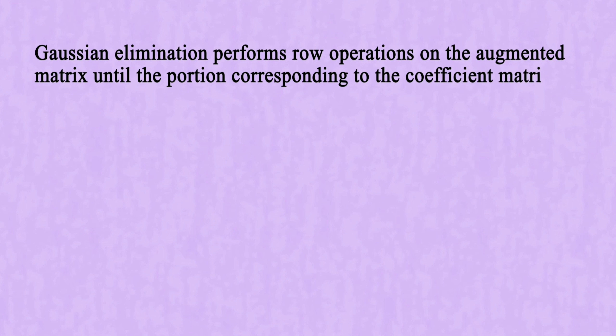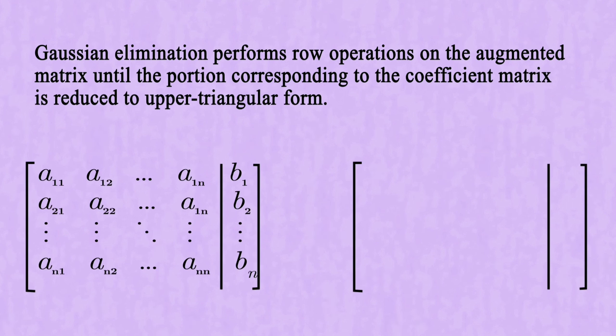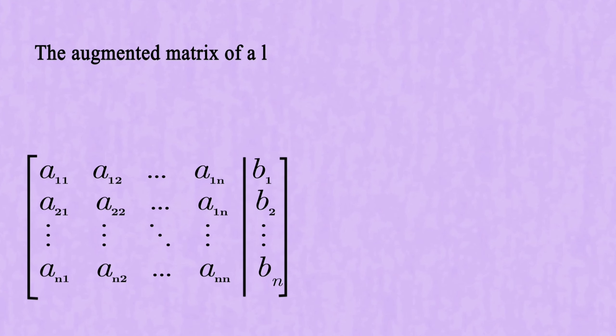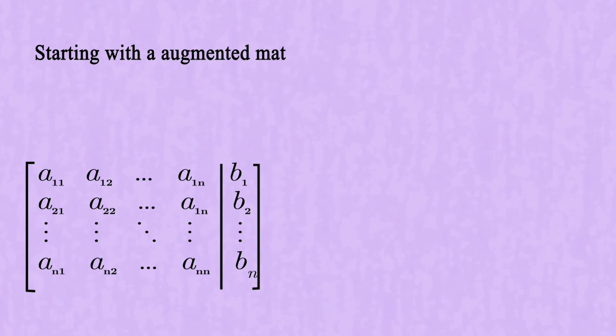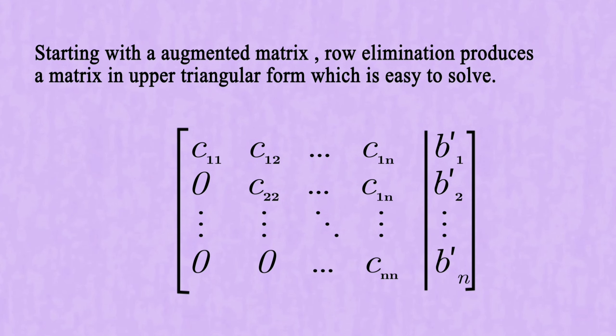Gaussian elimination. Gaussian elimination performs row operations on the augmented matrix until the portion corresponding to the coefficient matrix is reduced to upper triangular form. The augmented matrix of a linear system is the matrix of the coefficient of the variable of the system and the vector of the constant of the system. Starting with the augmented matrix, row elimination produces a matrix in upper triangular form which is easy to solve.